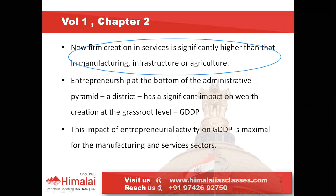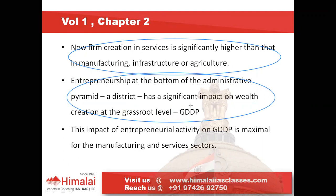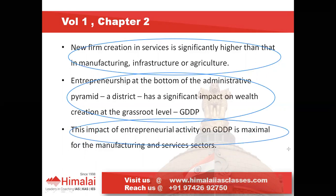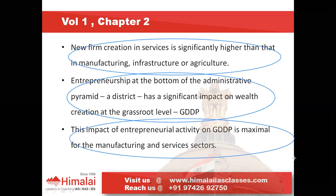Another observation made by this chapter is that entrepreneurship at the bottom of the administrative pyramid — that is, at the district level — has a significant impact on wealth creation at the grassroot level, measured here as Gross Domestic District Product (GDDP). Any new business initiated at the district level has its maximum impact within the district itself, compared to the state or national level. This impact on GDDP is greatest when the new business or entrepreneurial activity is related to manufacturing or service sector, because of the many upstream and downstream activities that are also supported.